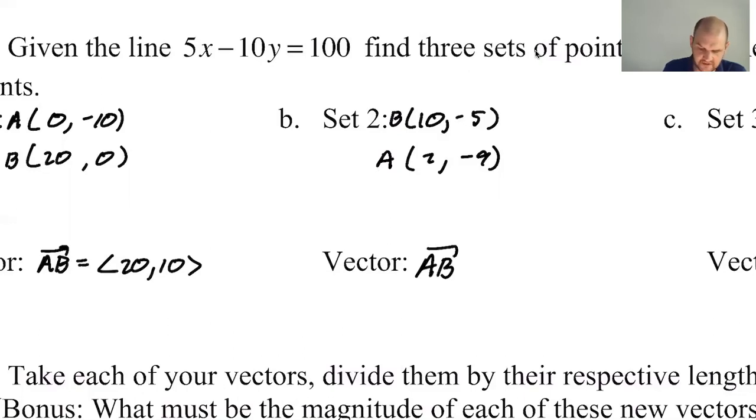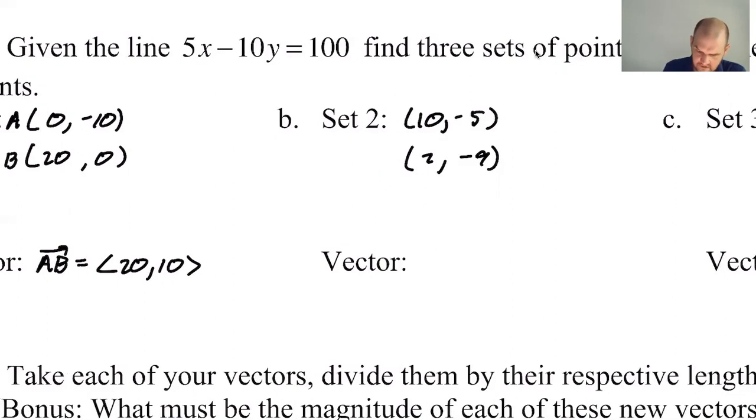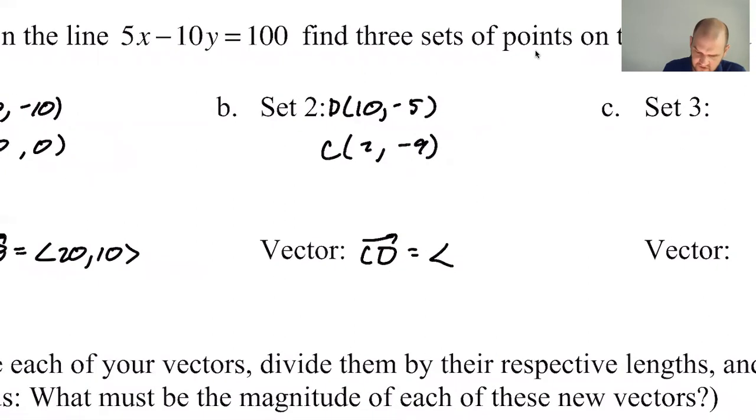I should probably call them c and d or something. Let's use different things. I'll call these points c and d. I'm going to start here and end here. So I'll get the vector CD, which is going to be terminal minus initial. So 10 minus 2 is 8, and then negative 5 minus negative 9 is 4.